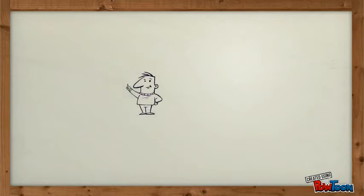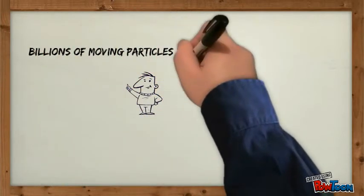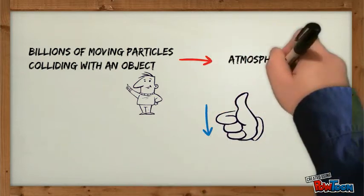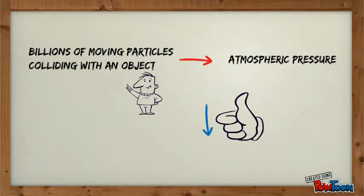Now, gas pressure. What is gas pressure? Well, it's billions of moving particles colliding with an object. This means that the air gives an atmospheric pressure, which decreases as elevation increases, because the air is less dense as elevation increases.